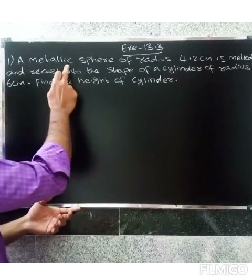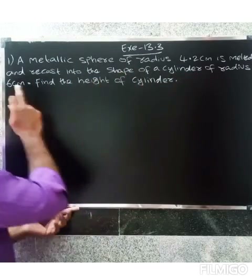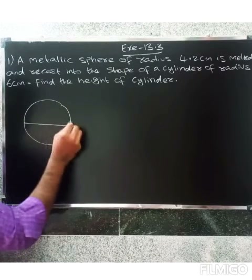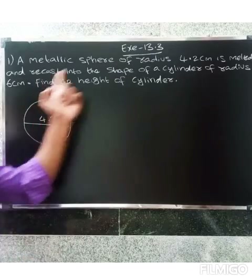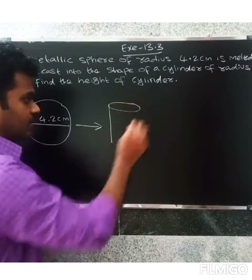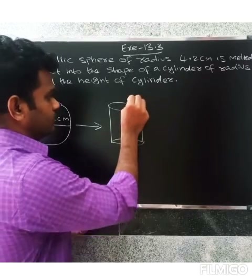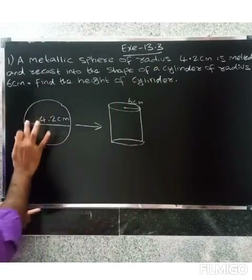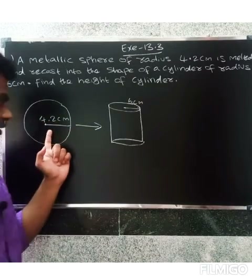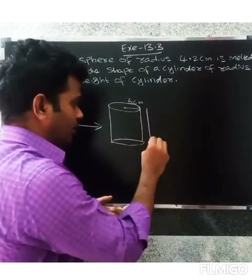This is Exercise 13.3, question 1. A metallic sphere of radius 4.2 cm is melted and recast into the shape of a cylinder of radius 6 cm. The sphere is melted and put into a cylinder shape with radius 6 cm. We need to find the height of the cylinder.